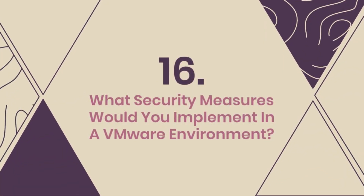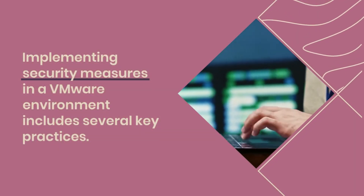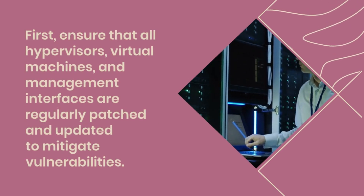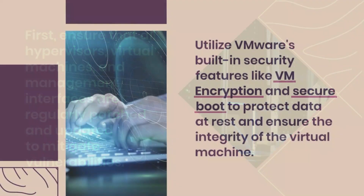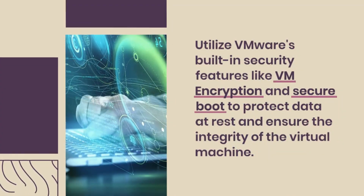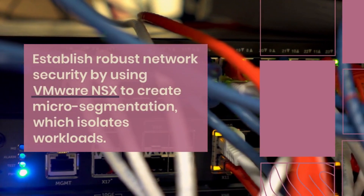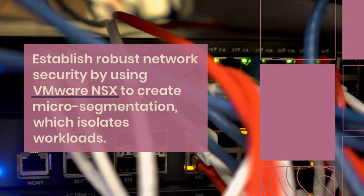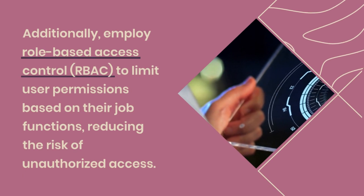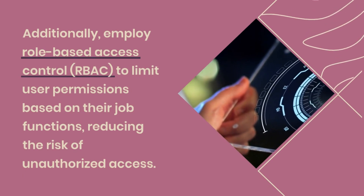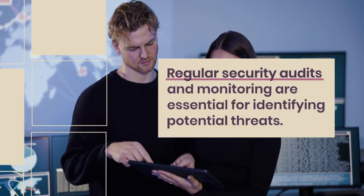Question 16: What security measures would you implement in a VMware environment? Implementing security measures in a VMware environment includes several key practices. First, ensure that all hypervisors, virtual machines, and management interfaces are regularly patched and updated to mitigate vulnerabilities. Utilize VMware's built-in security features like VM encryption and Secure Boot to protect data at rest and ensure the integrity of the virtual machine. Establish robust network security by using VMware NSX to create micro-segmentation, which isolates workloads. Additionally, employ Role-Based Access Control to limit user permissions based on their job functions, reducing the risk of unauthorized access. Regular security audits and monitoring are essential for identifying potential threats.